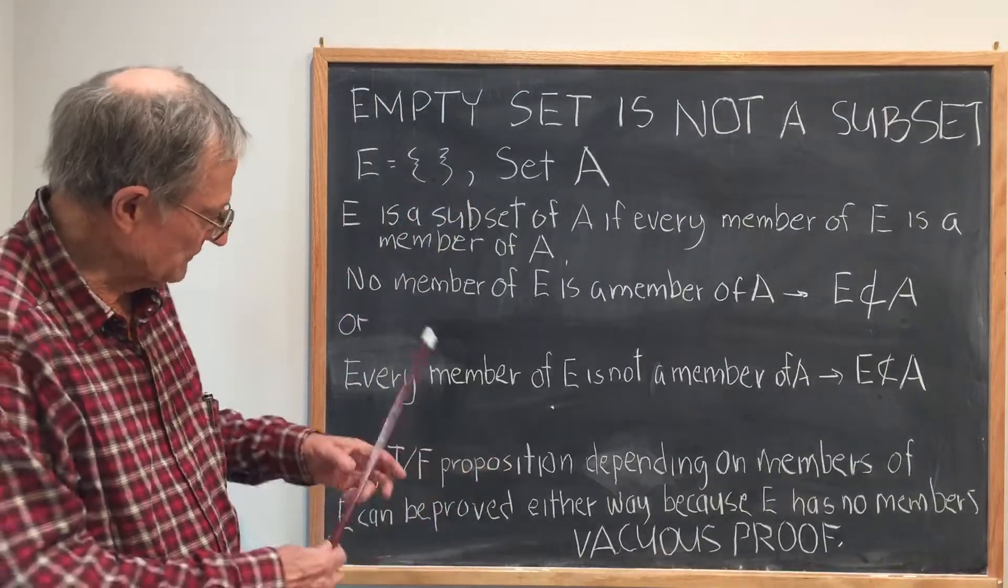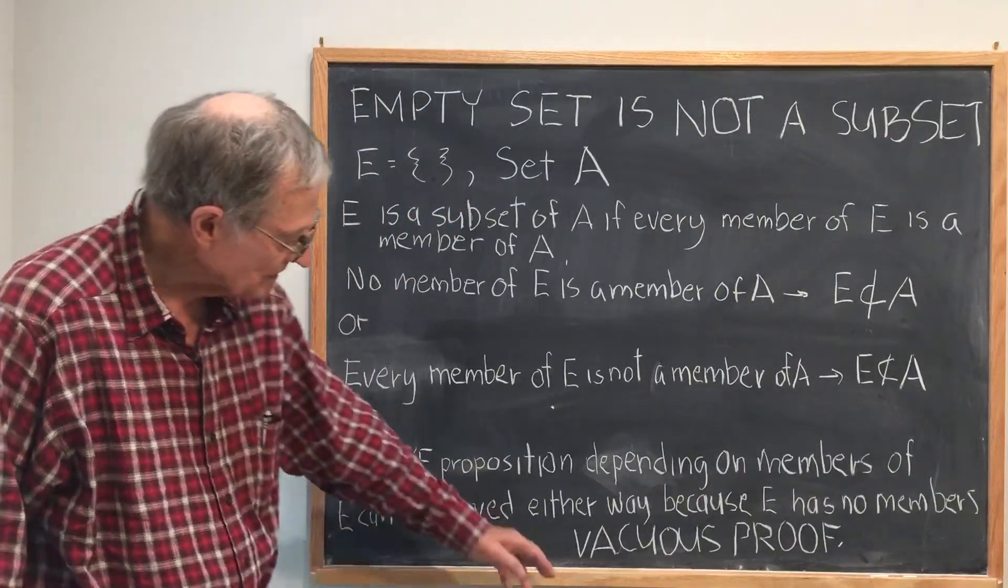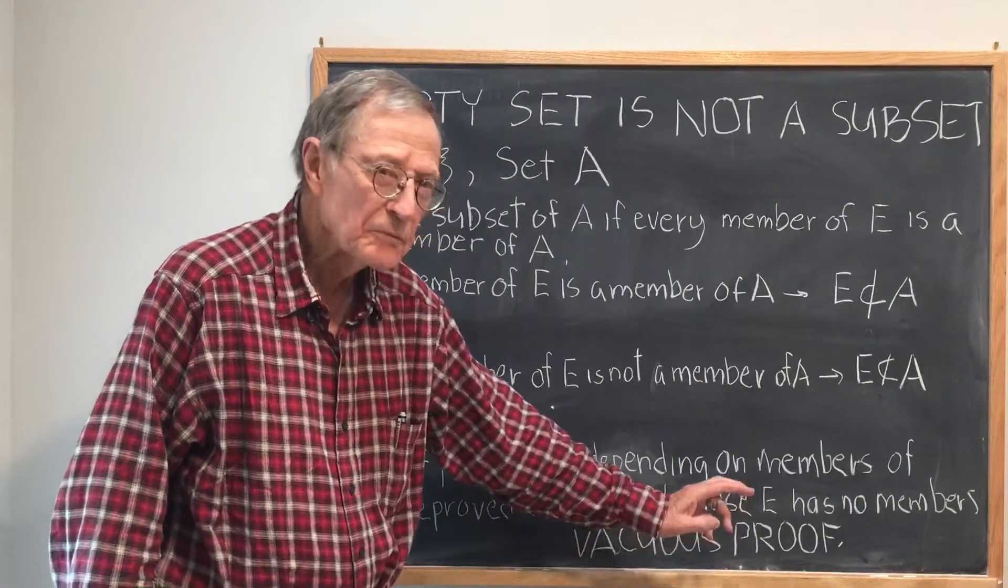The proof that I've just done and the fact that it can be proved either way is known as a vacuous proof.